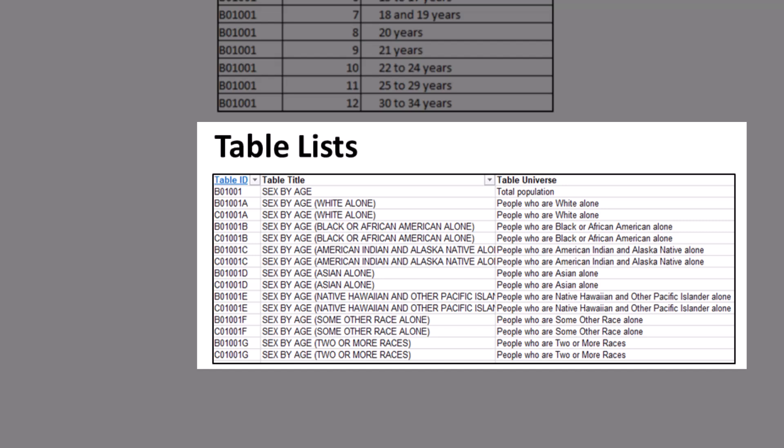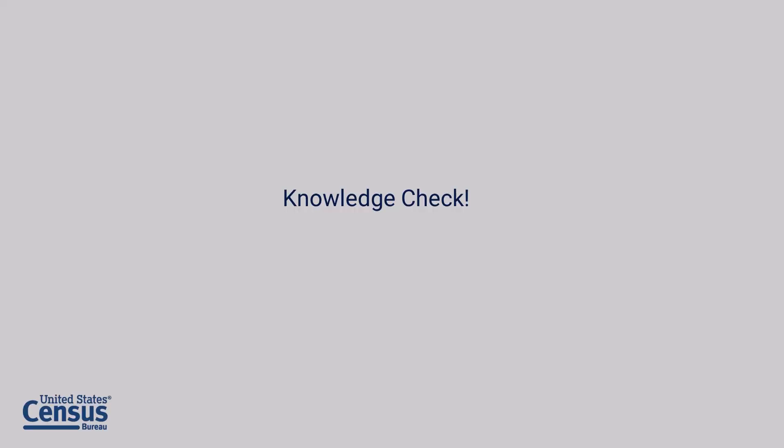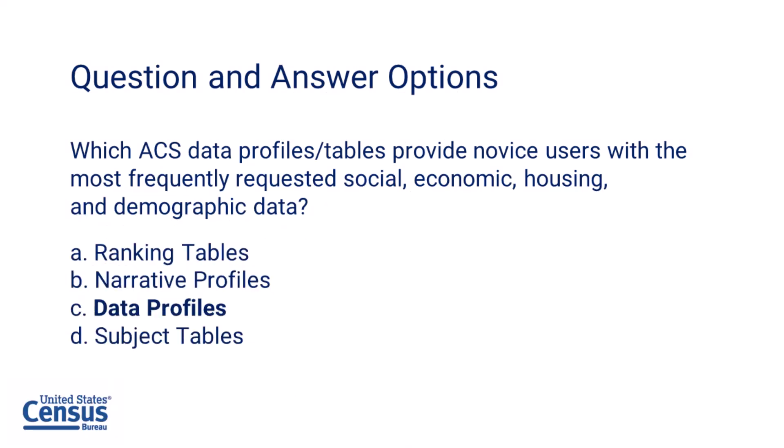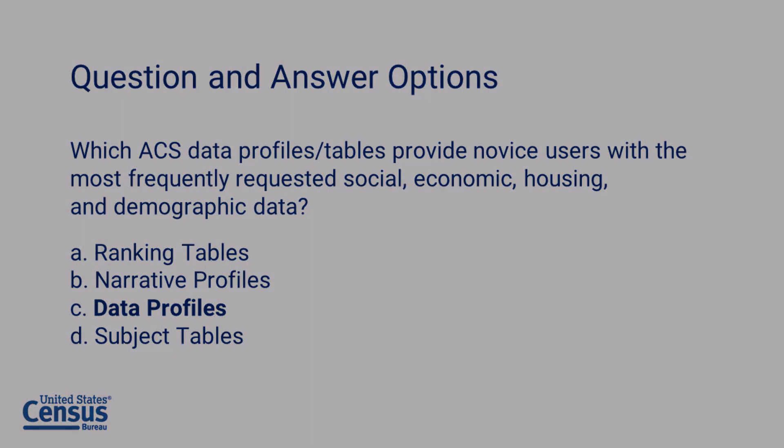Let's take a break for a knowledge check. Which ACS data profiles or tables provide novice users with the most frequently requested social, economic, housing, and demographic data? Ranking tables, narrative profiles, data profiles, or subject tables? If you said data profiles, you are correct. They provide the most frequently requested social, economic, housing, and demographic data.